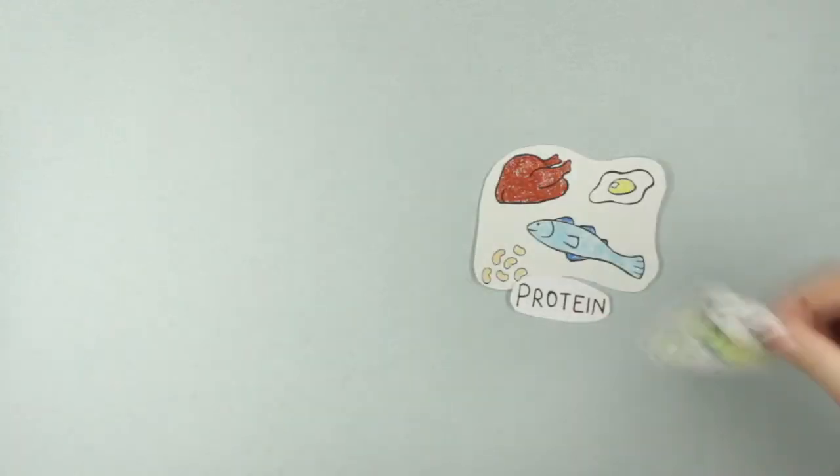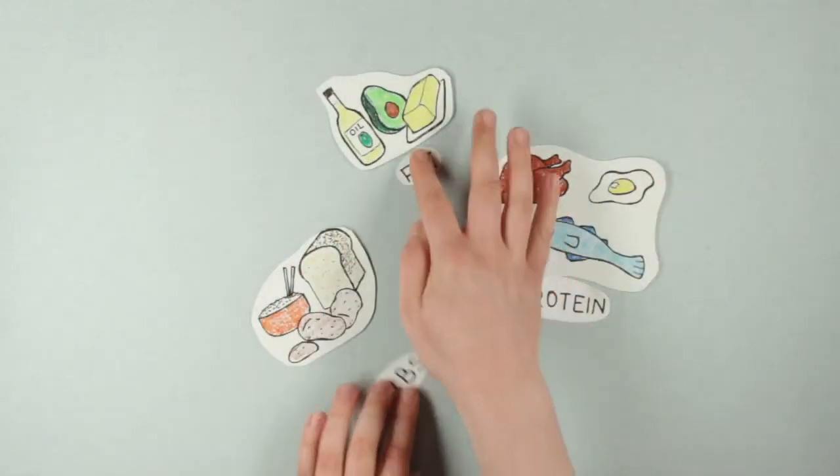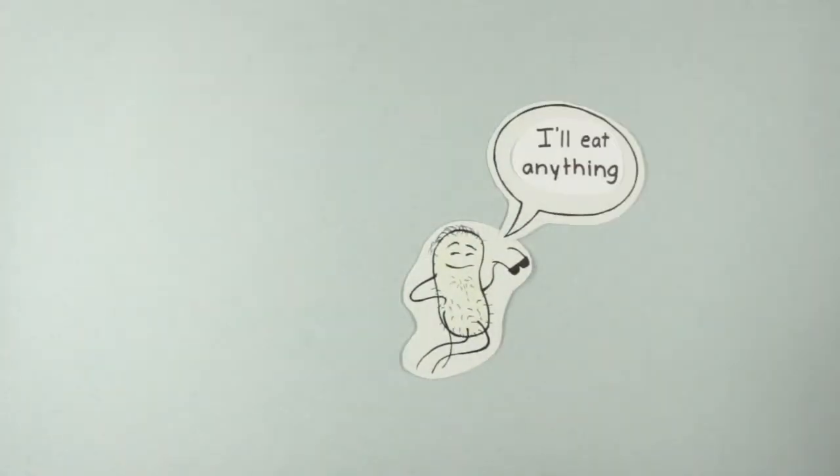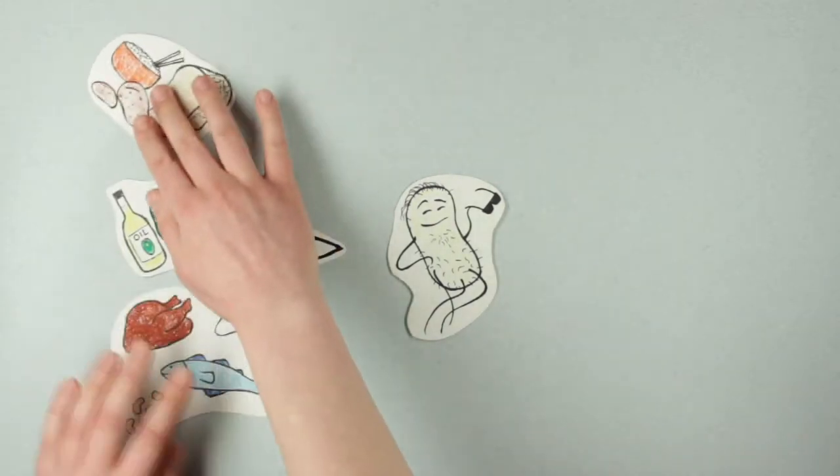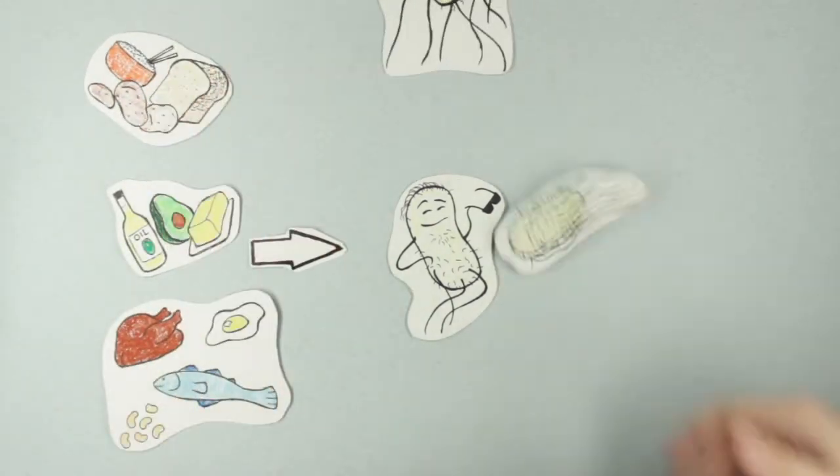Bacteria are actually pretty amazing, as they don't need such diverse nutrition as we do. They can make each of these building blocks themselves. However, if you give them more food, they will still really like it, because they will start growing like bananas.